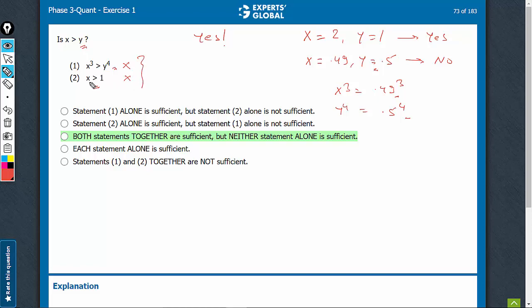Let's combine. On combining, we know that x is greater than 1, so cases such as this cannot be taken. Only such cases will remain. And in such cases, if x is greater with a lower power compared to a higher power of y, that means x has to be bigger.